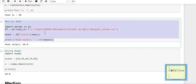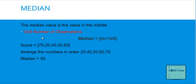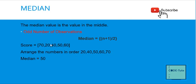Now let's understand how to calculate the median. The median is the value in the middle. For example, with scores 70, 20, 40, 50, 60, first arrange them in order: 20, 40, 50, 60, 70. The middle value is 50, so that is the median. This is straightforward when the number of observations is odd.